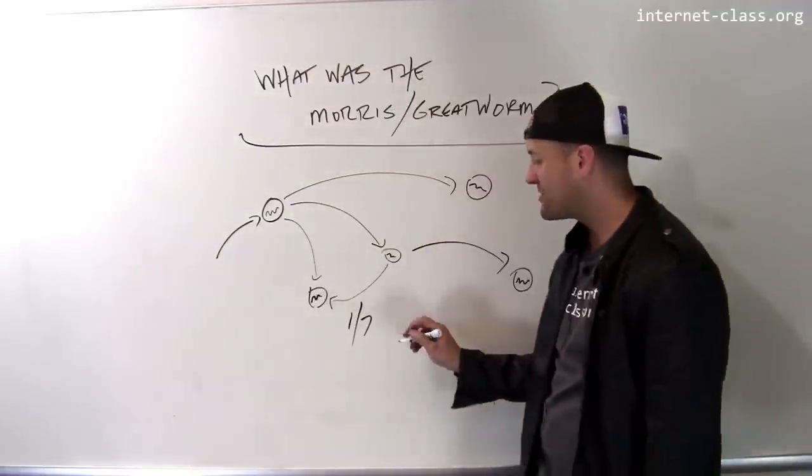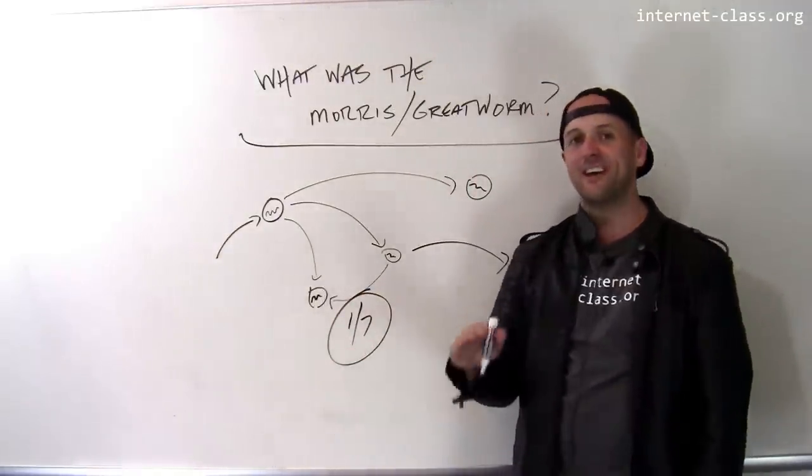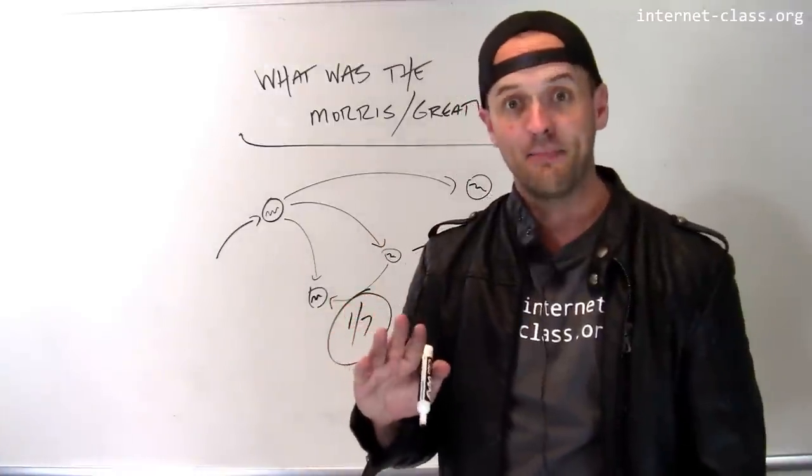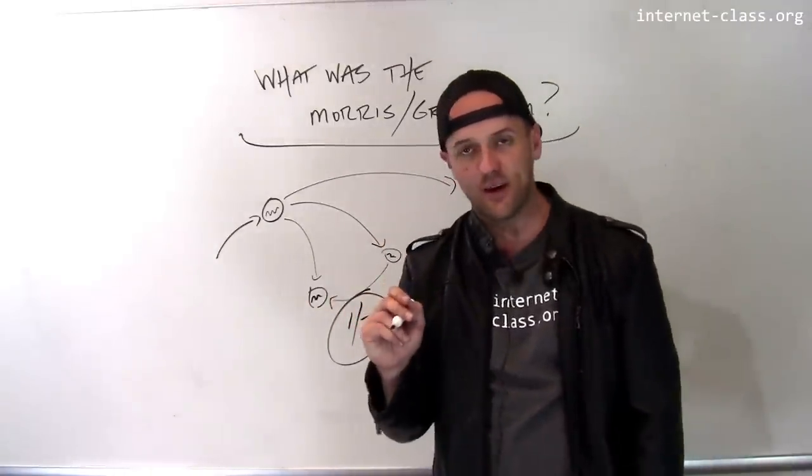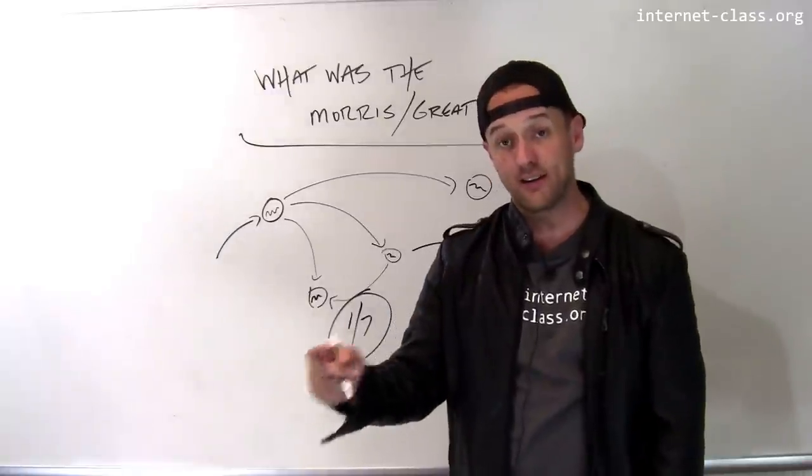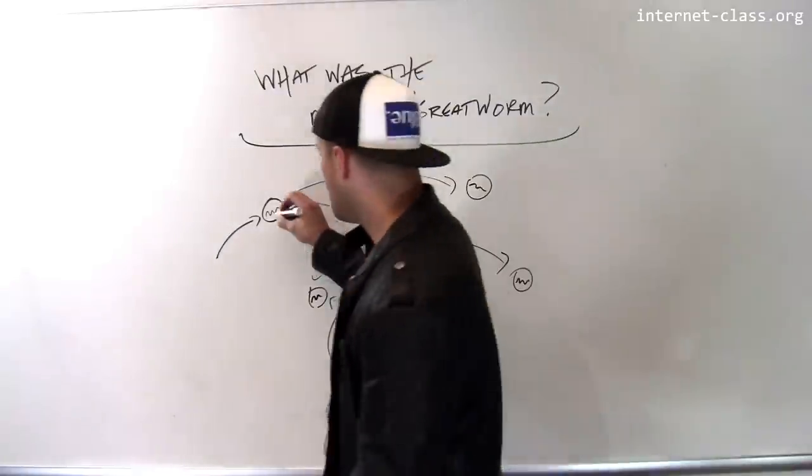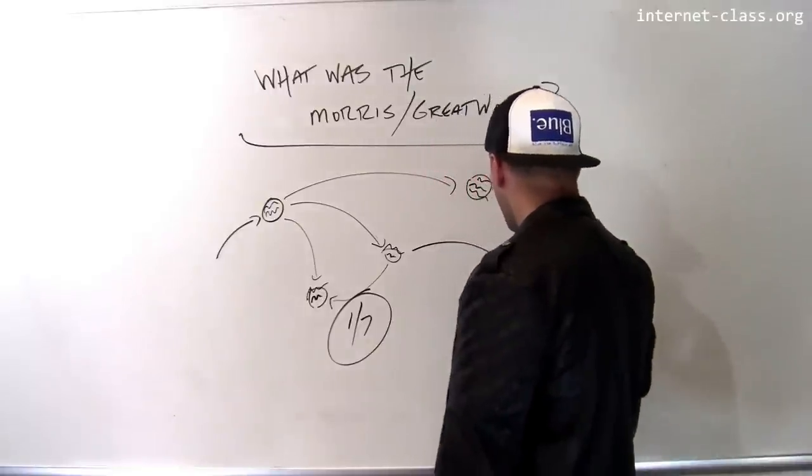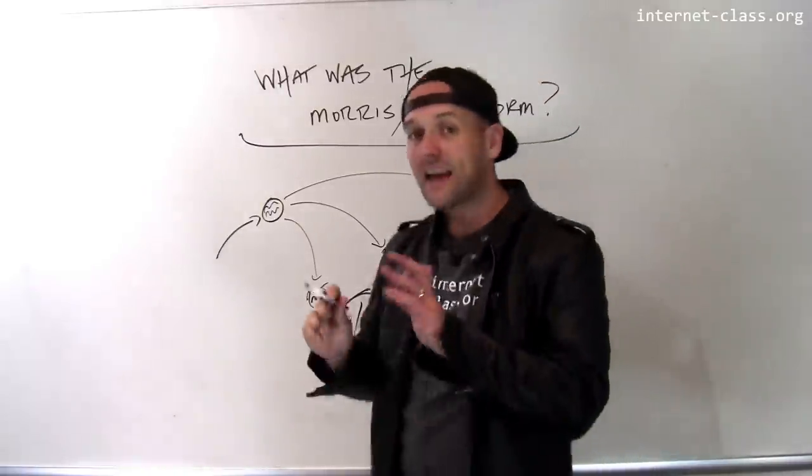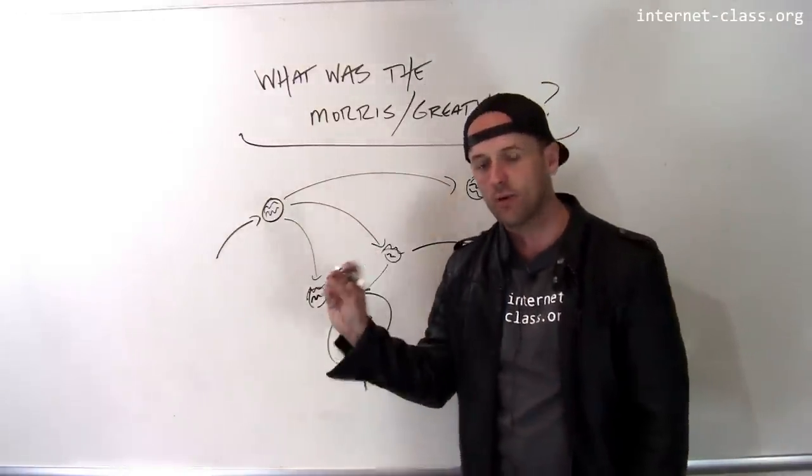So unfortunately, this ratio was too big. And what happened is, even though six out of seven times the worm would not reinfect a host that it had already infected, over time, that one out of seven was enough that computers ended up running hundreds, thousands of copies of this little worm program.